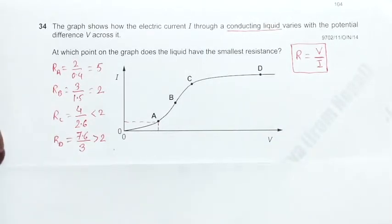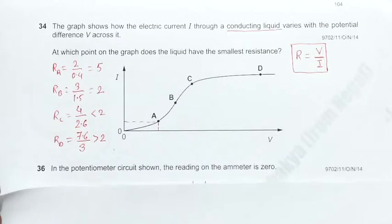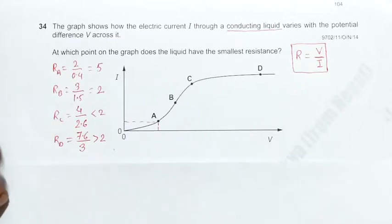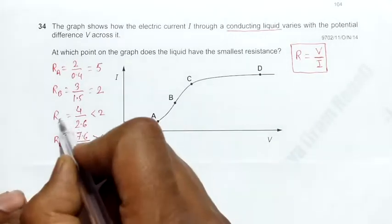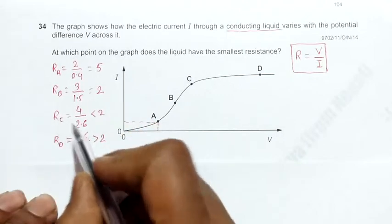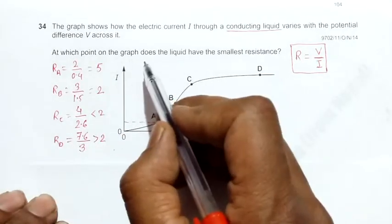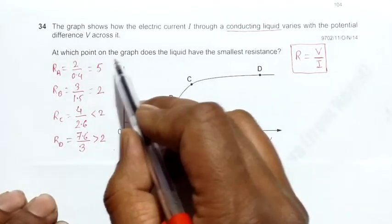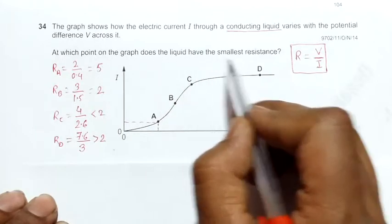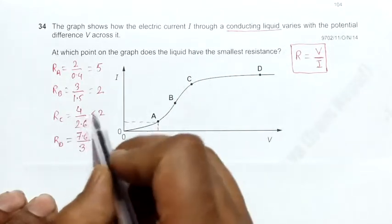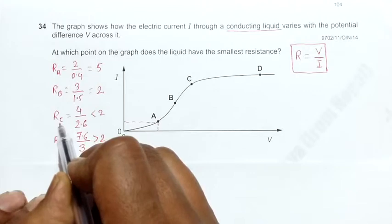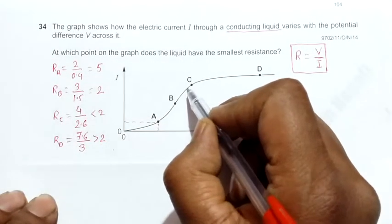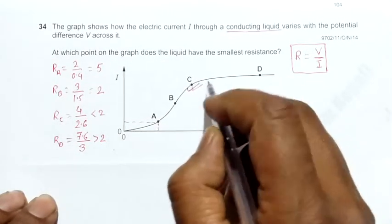Going through these readings, C is less than 2. The question asks at which point does the liquid have the smallest resistance, so the C point will be showing the smallest resistance. The correct choice should be C.